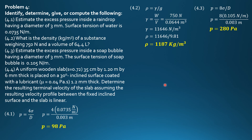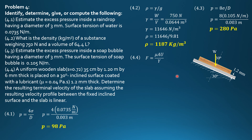Lastly, a uniform wooden slab with specific gravity 0.72, dimensions 35 cm by 1.2 meter by 6 mm thick, is placed on a 30-degree inclined surface coated with a lubricant of viscosity 0.04 Pascal-seconds and 1.2 mm thick. Determine the resulting terminal velocity of the slab, assuming the velocity profile between the fixed inclined surface and the slab is linear. We use the formula: force equals mu times area times U over Y for a Newtonian fluid. The force is the component of weight parallel to the incline, which causes movement or shear force: W sine of 30 degrees equals mu times area times U over Y. So, U equals F times Y over mu times A.